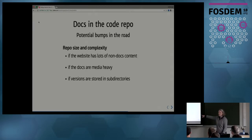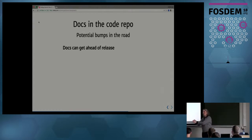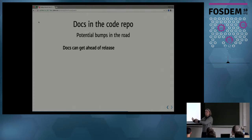I wouldn't do subdirectory versioning if your docs are in the code repo. Another thing to think about is that docs can get ahead of the release. As you're merging code and waiting to tag a release, the code gets merged but the tagged version that people are using doesn't have that new code yet. If you're on version 1.1 and you've merged commits headed for 1.2 — but 1.2 isn't out yet — your docs might already be for 1.2 while people are still using 1.1.